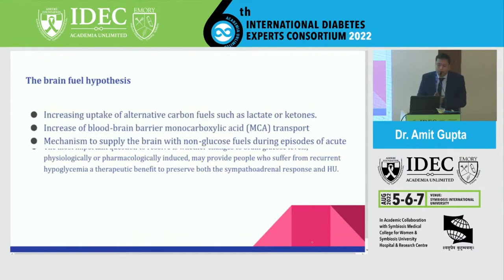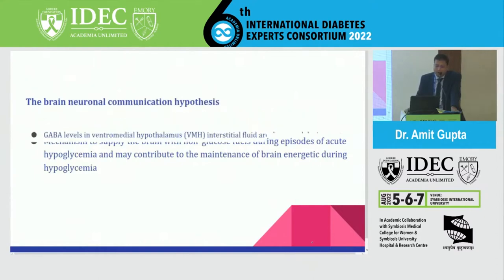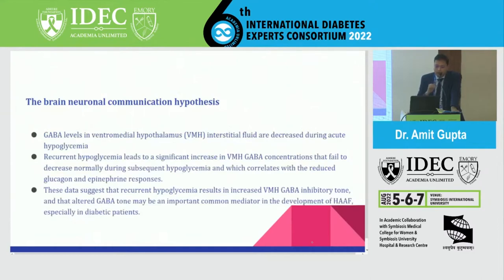The third is the brain fuel hypothesis: during systemic hypoglycemia, the brain switches to an alternate fuel such as lactate or ketones, with an increase in blood-brain barrier monocarboxylic acid transport allowing the brain to remain active when blood glucose falls. The fourth is the neural communication hypothesis, which states that GABA levels in ventromedial hypothalamus interstitial fluid decrease during acute hypoglycemia, but with repeated acute hypoglycemia these levels actually increase, so neuronal networks no longer recognize systemic hypoglycemia and the patient lands immediately into more severe symptoms.